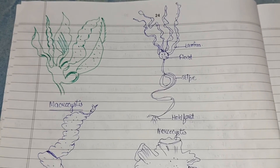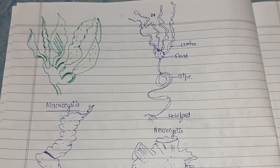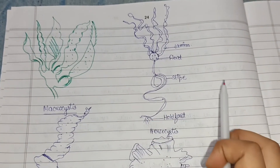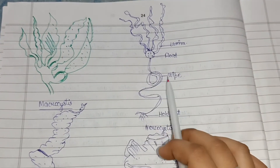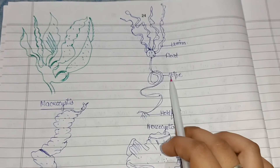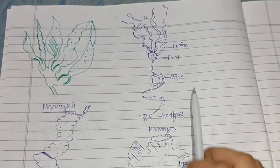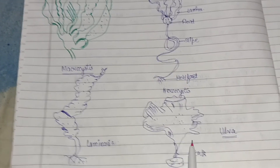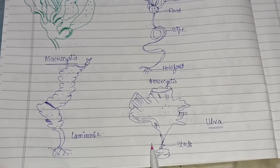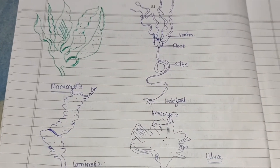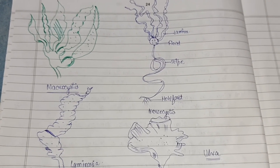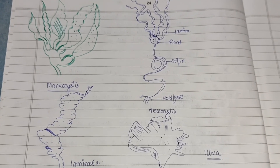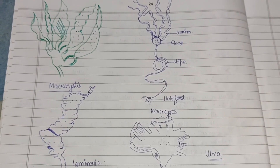These are diagrams of economically important algae — Macrocystis, Nereocystis (with the stripe part that is edible), Laminaria (showing holdfast), and Ulva. This concludes the topic on the economic importance of algae. Please like, share, and subscribe to the channel.